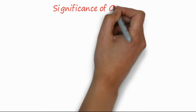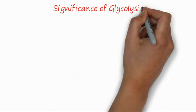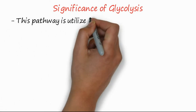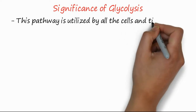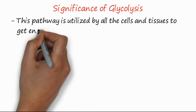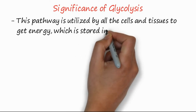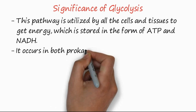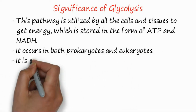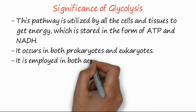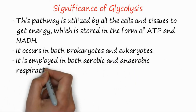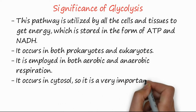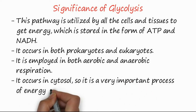Significance of glycolysis — why is glycolysis so important? This pathway is utilized by all cells and tissues to get energy, which is stored in the form of ATP and NADH. It occurs in both prokaryotes and eukaryotes. It is involved in both aerobic and anaerobic respiration. It occurs in the cytosol, so it is a very important process of energy generation.